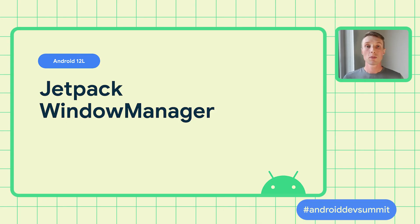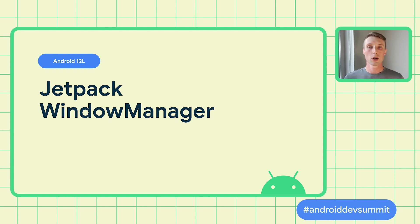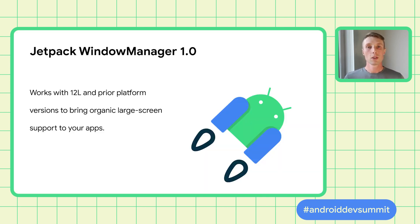It also provides detailed information about display features like folds and hinges and device configurations. We'll cover the stable APIs available in the library, and we'll take a look at some of the new experimental tools in the current and upcoming versions to help your app look great on large screens. The library takes advantage of the latest features in 12L, but also works with prior platform versions down to API level 14.